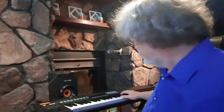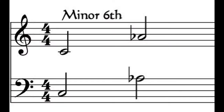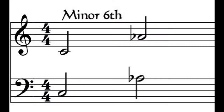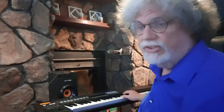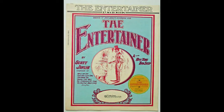The first interval we're going to talk about is the minor six. If we're going from C, then a minor six is the A-flat above it. From D, it's the B-flat above it. The classic song to remember this is the Scott Joplin piece, The Entertainer. It doesn't start off with a minor six — it starts off with a half step — but then it quickly goes to the minor six.